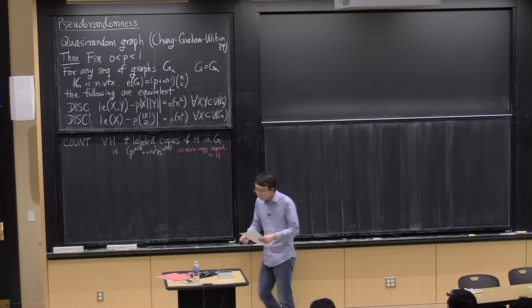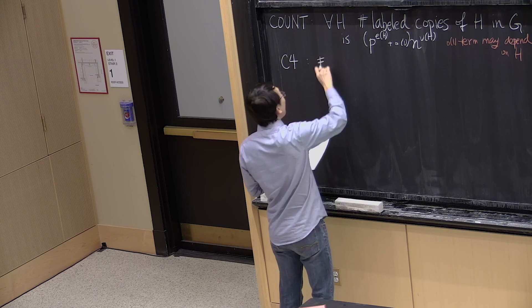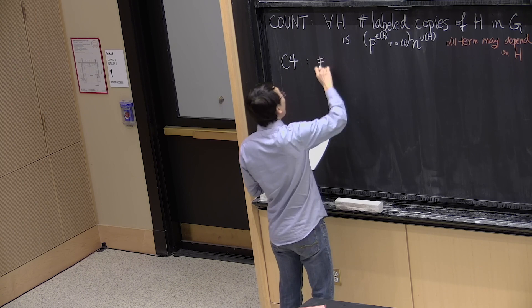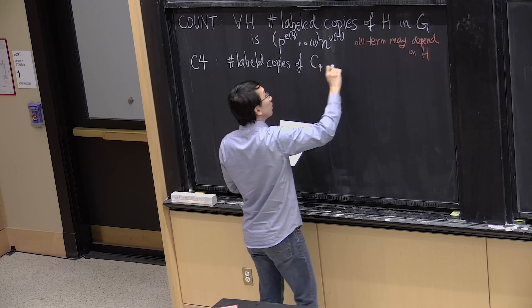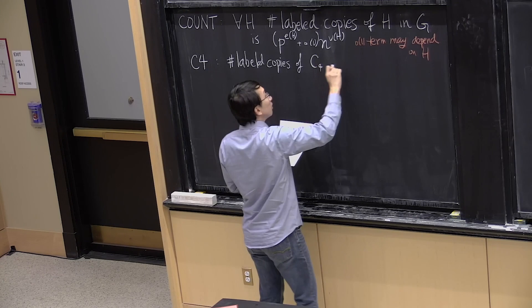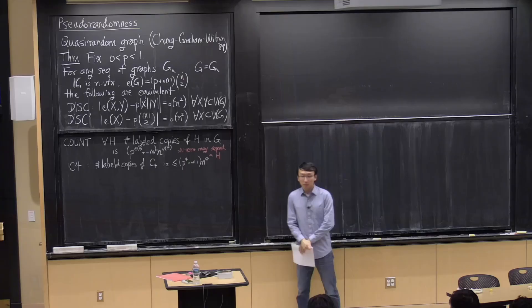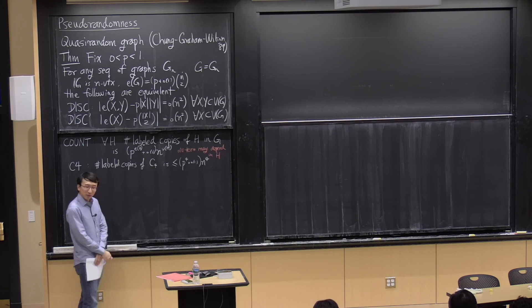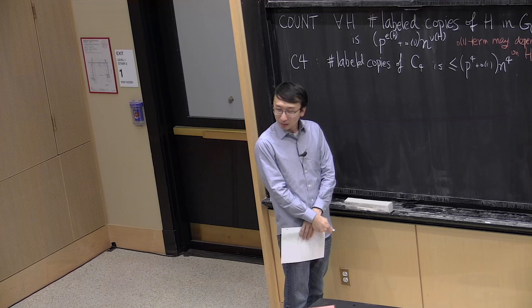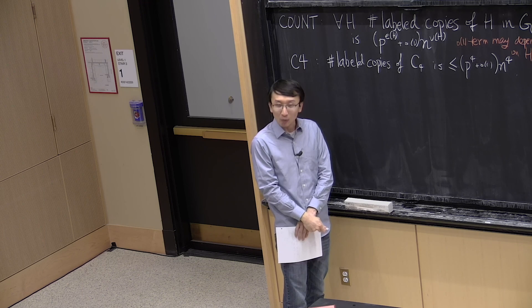The next one is almost a special case of COUNT — it's called C4. It says that the number of labeled copies of the 4-cycle C4 is at most P to the 4th times N to the 4th, plus a small error — what you should expect in a random setting. It turns out that C4 alone implies everything; just having the correct C4 count is sufficient.